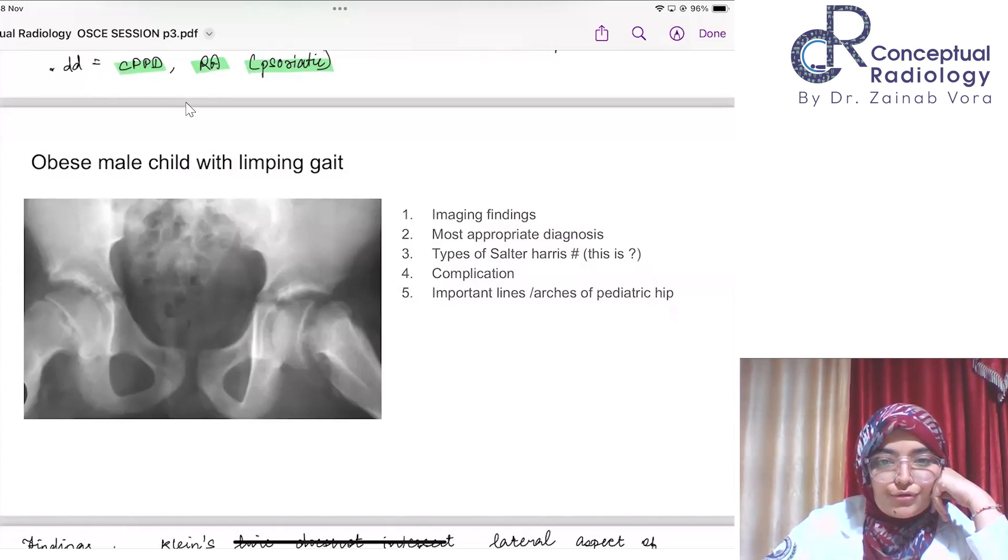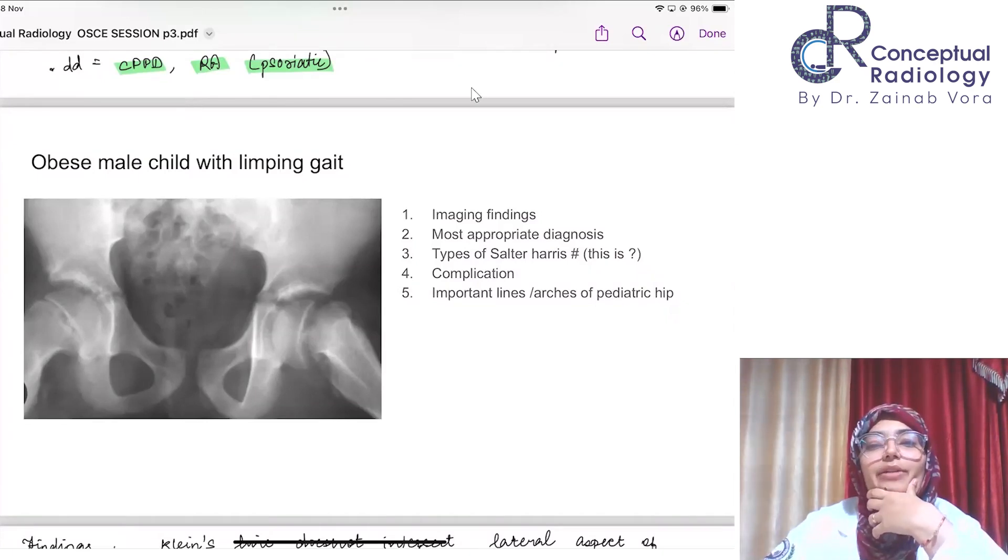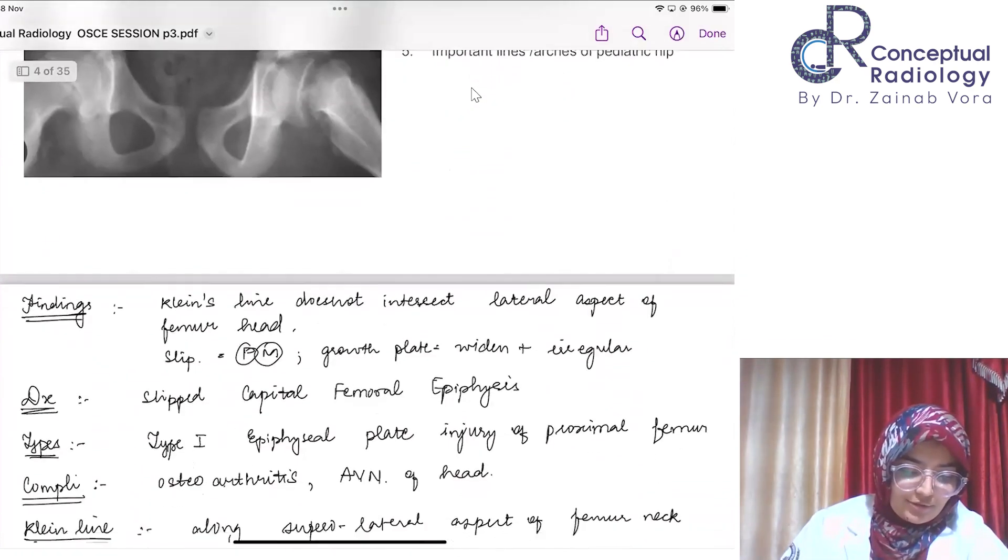Trethowan sign, Klein's line. Rithvik Sahu has answered very good, some difficult lines also: Perkin's and Hilgenreiner and Shenton's arch, very good. Shenton's line, growth restriction, osteoarthritis, and avascular necrosis. You guys have given me all the correct answers, so kudos to you. Let's see it one time. What are the findings?